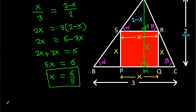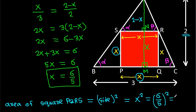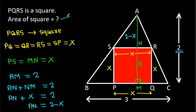Now the area of square PQRS will be equal to side squared. The side is X, so it will be X squared. X is 6 by 5, so the area will be 36 by 25. Thank you.